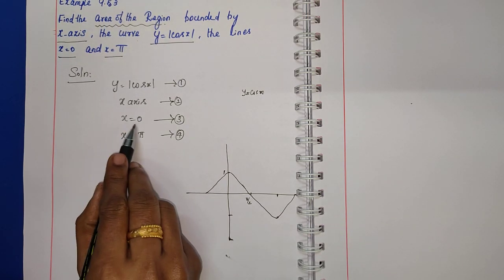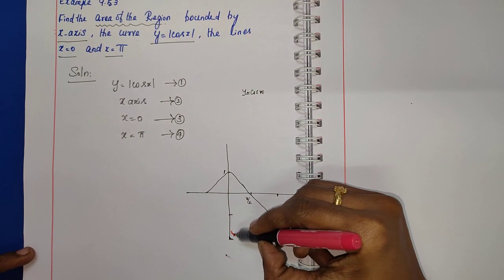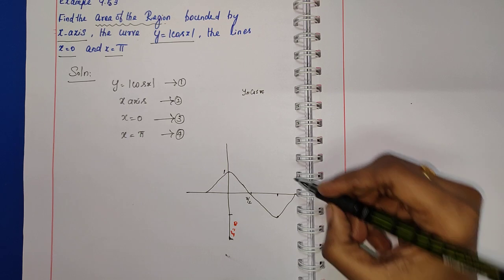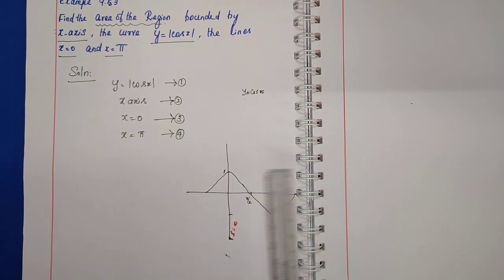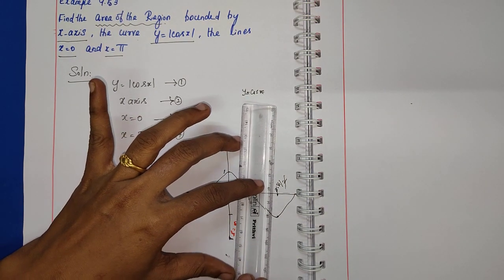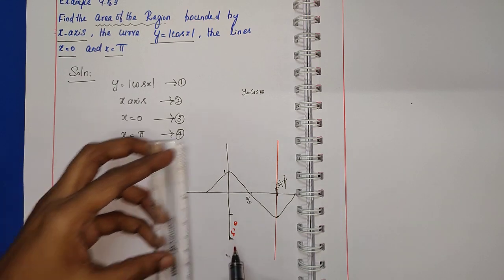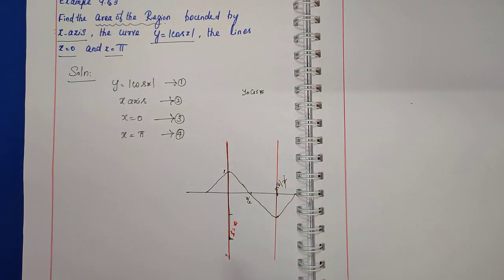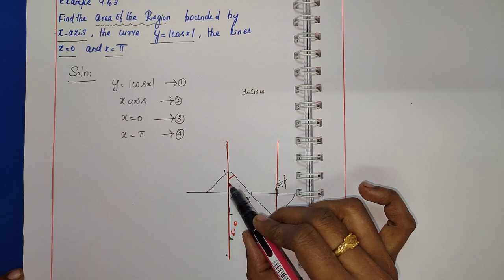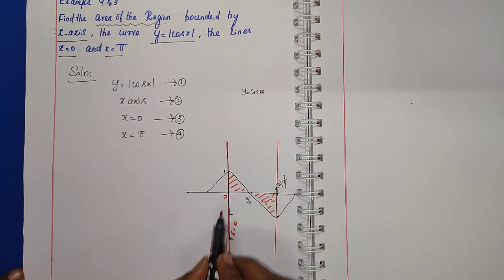Our region is bounded by x is equal to 0 and x is equal to pi. The line x is equal to 0 is the y-axis, and x is equal to pi is the other boundary. The region spans from 0 to pi by 2 and then pi by 2 to pi.